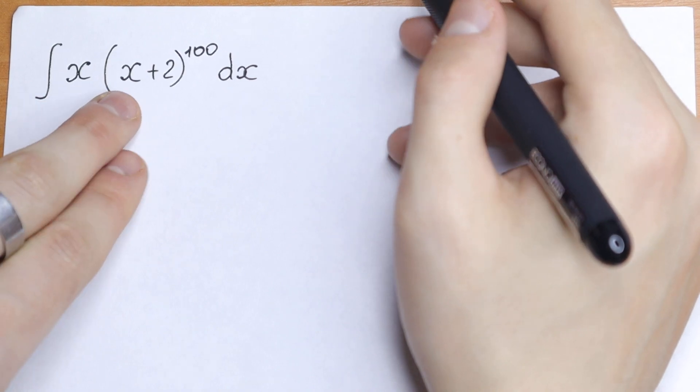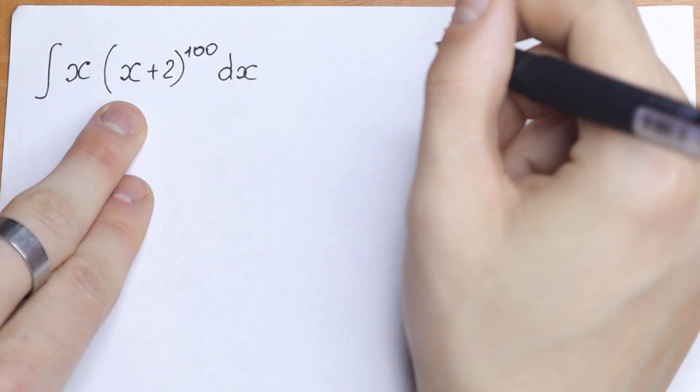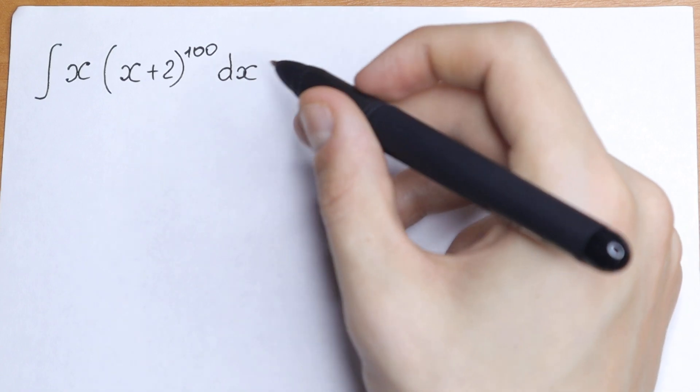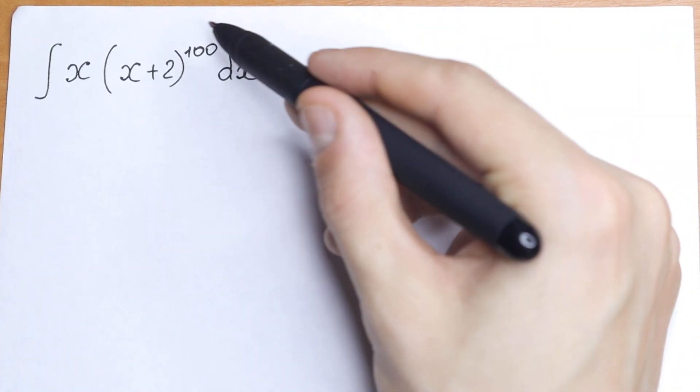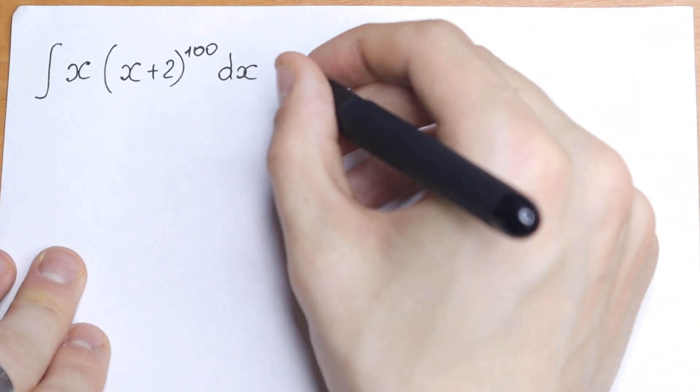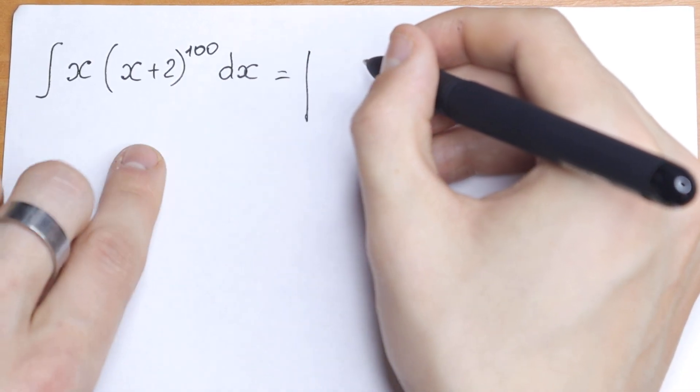We have integral x times x plus 2 to the power 100. On the first sight this integral is really hard because we have a very huge power.